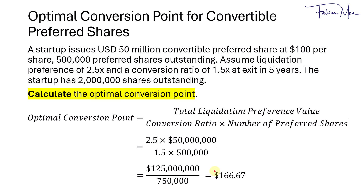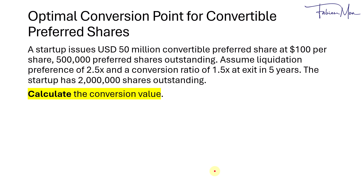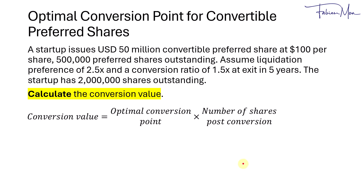If the equity value at exit is greater than this optimal conversion point, then the optimal decision is for the preferred shareholders to convert their preferred shares into common shares. Next, if you are asked to calculate the conversion value, we will need the optimal conversion point which we computed previously and multiply by the number of shares post-conversion.